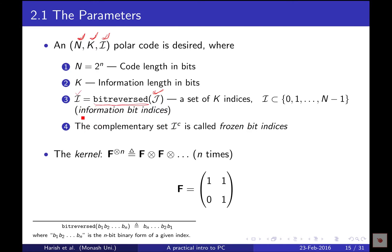This set is called information bit indices and the complementary set is called frozen bit indices. The bit reversal operation is: take the binary representation of a given integer index in n bits — since every index is less than or equal to 2^n, n bits is sufficient. Represent every index in binary form, reverse the order of the binary digits, get the new integer, and place that integer into the set script I.